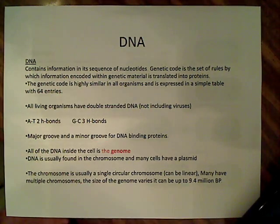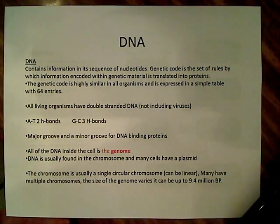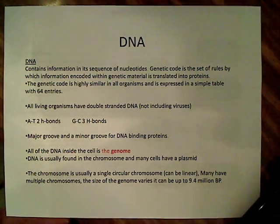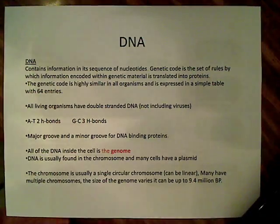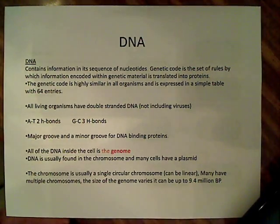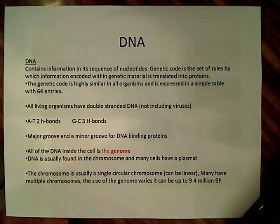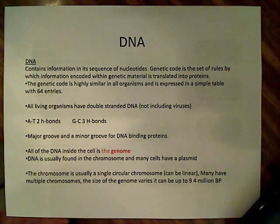This genetic code is highly similar in all organisms. An important point when talking about bacteria is that bacteria don't have different bases or a different genetic code — that's just not the truth. It's similar in all organisms, and you can use a table with 64 entries to determine it. That table can be found with a quick Google search.